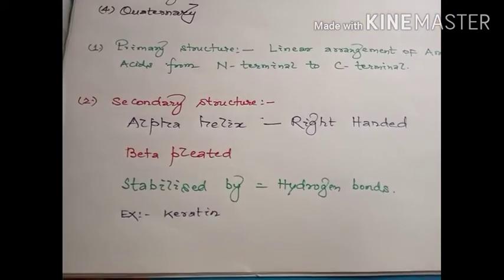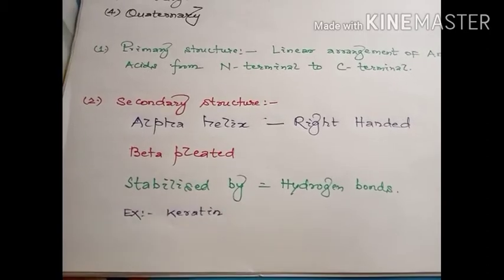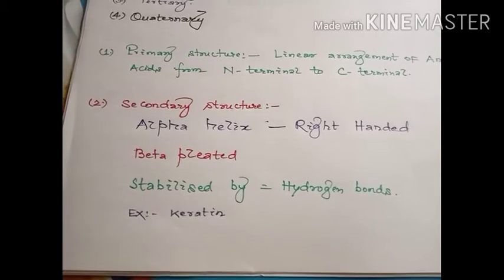Another type of secondary structure is the beta pleated structure, which is in the form of a sheet. In the beta pleated structure, a sheet-like structure is formed with foldings. It is also stabilized by hydrogen bonds — while the peptide bond is present between amino acids, hydrogen bonds additionally provide stability to the beta pleated structure.